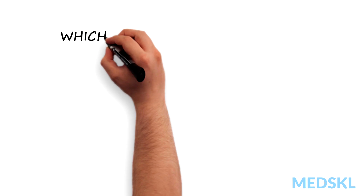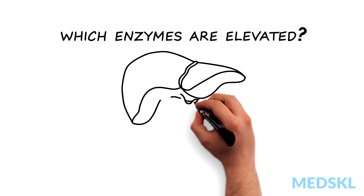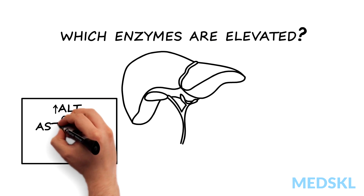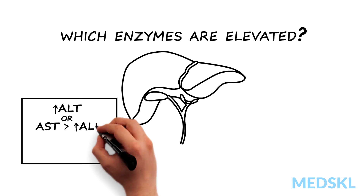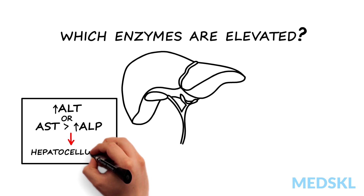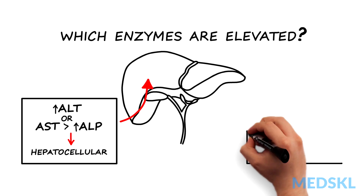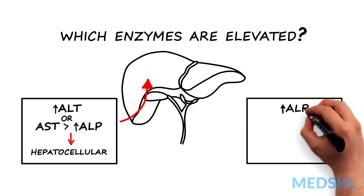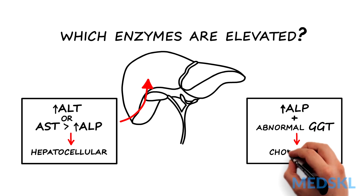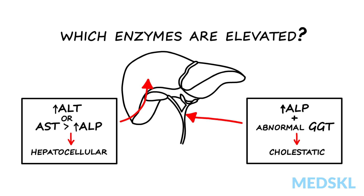First, take a look at which enzymes are elevated. A rise in ALT and/or AST that is proportionally higher than the ALP indicates a hepatocellular pattern of injury, while a rise in ALP confirmed to be from the liver by an abnormal GGT indicates a cholestatic pattern.